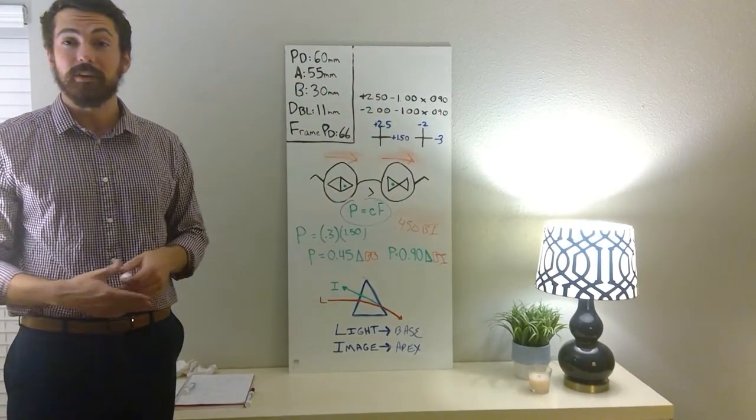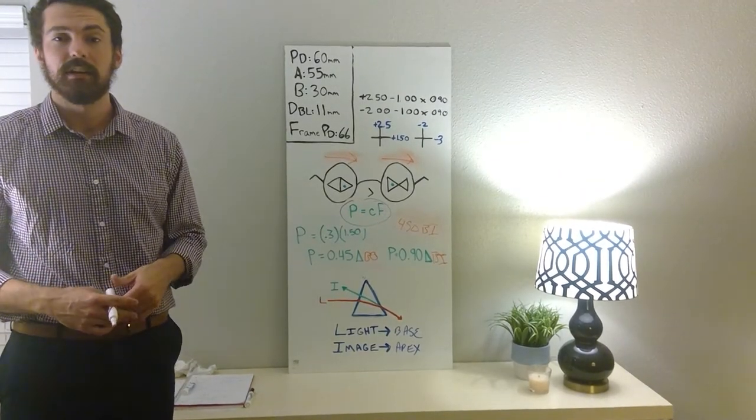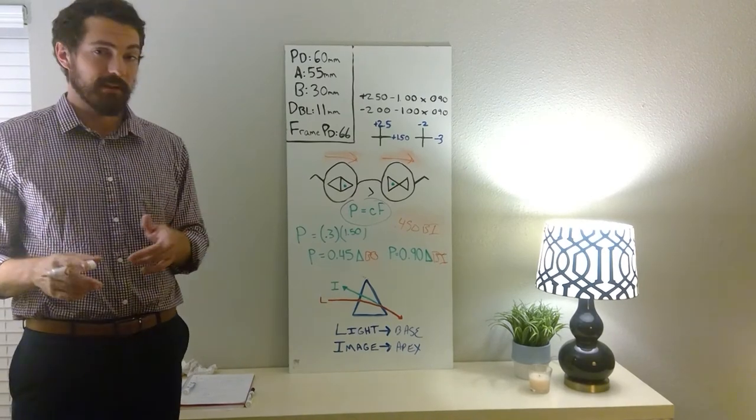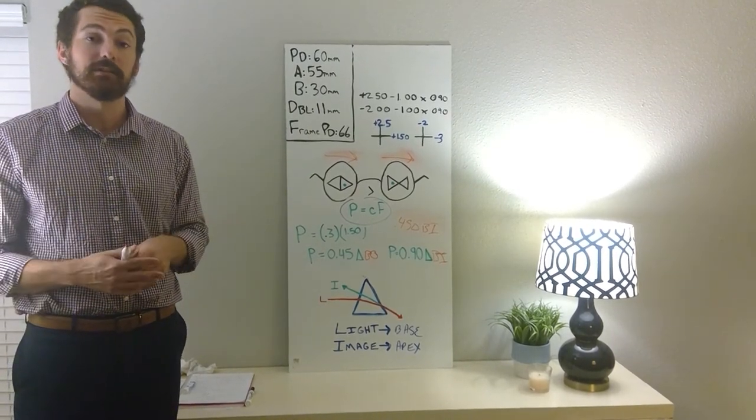Little bonus question to stretch you a little farther: Is this going to be in or outside of the ANSI standard for horizontal induced prism? And it's going to be within, right? Because the standard is 0.67 prism diopters of horizontal induced prism.